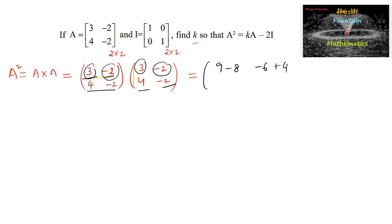Again, second row, first column: 4 into 3 is 12, and minus 2 into 4 is negative 8. Next, 4 into negative 2 is negative 8, and negative 2 into negative 2 is plus 4.